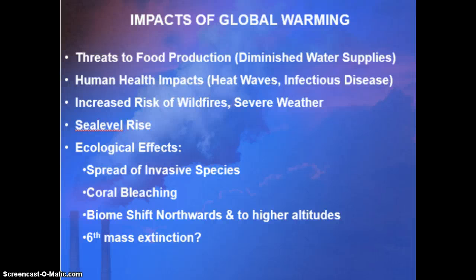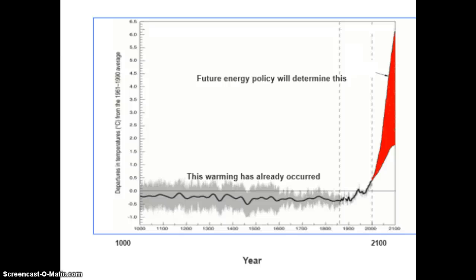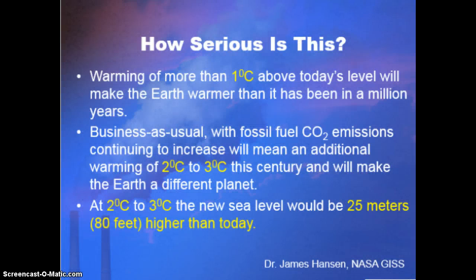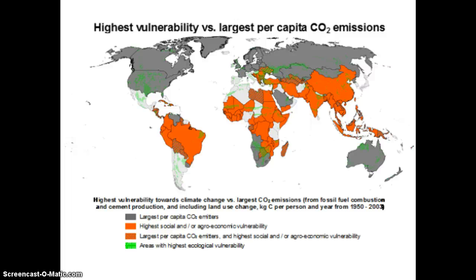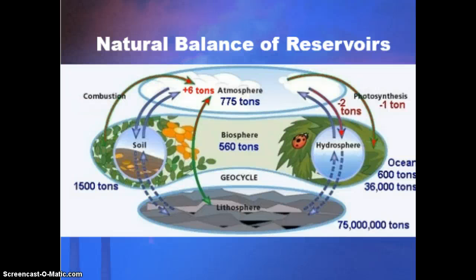We have to either find a way to deal with this or find a way to stop it — this is where future energy policy will really come into play. These numbers may seem small, but pause and think about how you yourself could be impacted. Remember, we also have positive feedback mechanisms that can make things even worse. This is also a social justice issue, as the areas most vulnerable to climate change are often already in turmoil. Tomorrow in class we'll talk more about this balance, so come prepared knowing how carbon circulates.